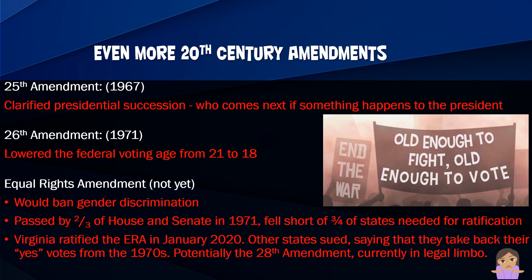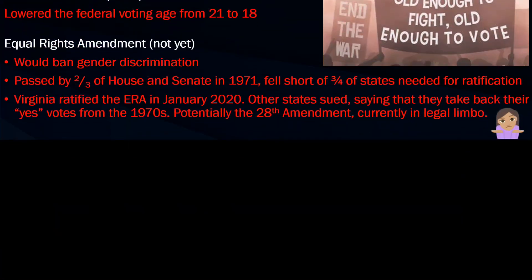The ERA is probably not going to pass anytime soon. You'd think banning gender discrimination would be straightforward, but some people worry it could open cans of worms — for example, whether men's or women's sports teams would still be allowed. It's kind of in limbo right now. Anyway, that's your quick overview of the important amendments beyond the Bill of Rights. They're all important. Go back and do your quizzes and questions — thank you for listening.